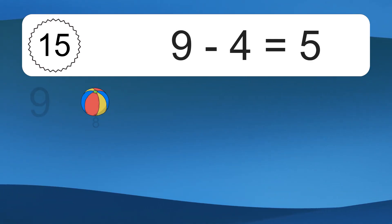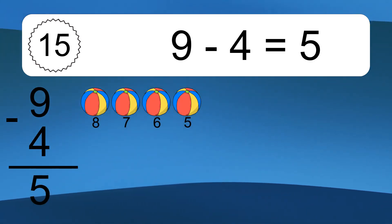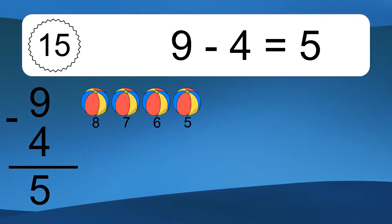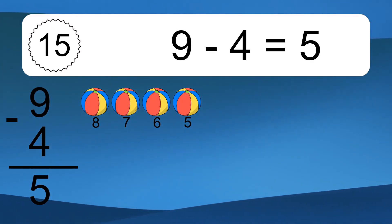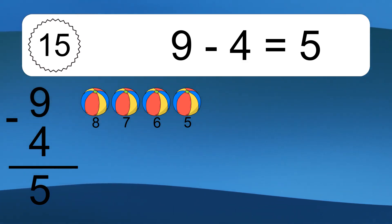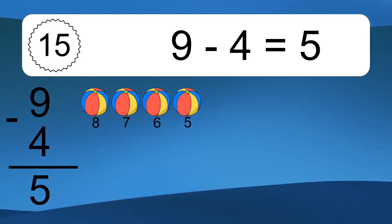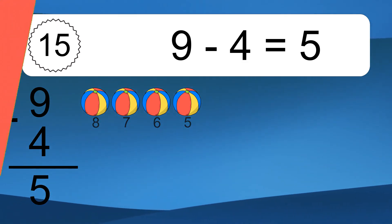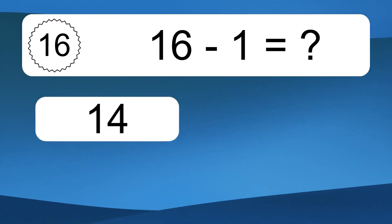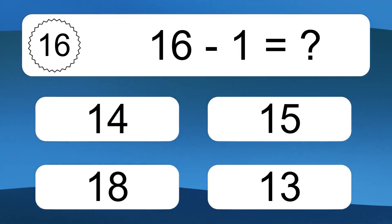9 minus 4 equals what? 9 minus 4 equals 5. Let's count it: 8, 7, 6, 5.